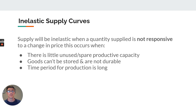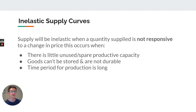The second factor is about whether or not goods can be stored — we call this durability. If the goods can't be stored, if they can't be produced previously and stored away waiting for the price to go up, then this will lead to an inelastic supply curve. Finally there's the time period: how long does it actually take to produce this particular good or service? If it takes a really long time, that's going to mean that suppliers can't respond to an increase in price.